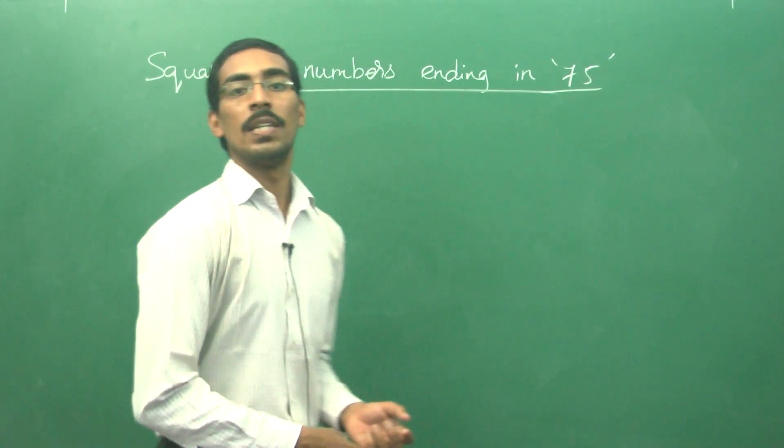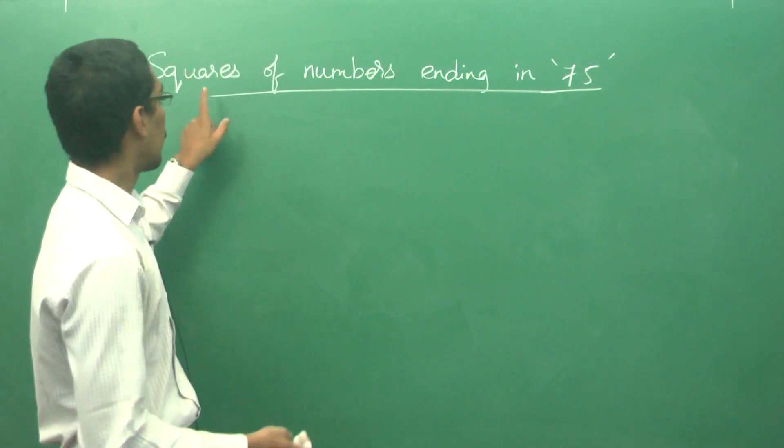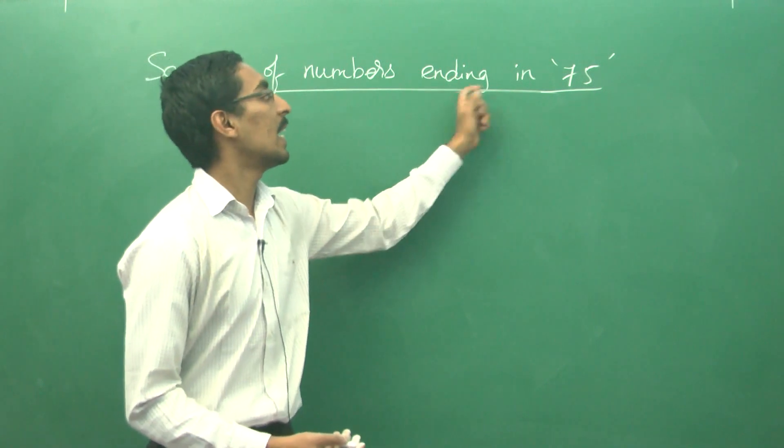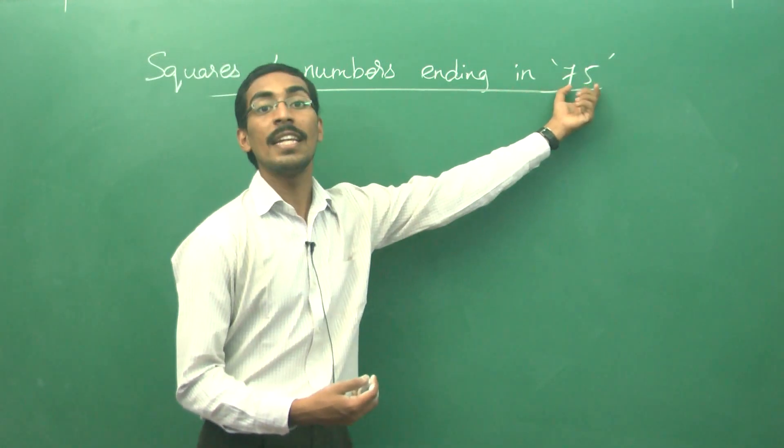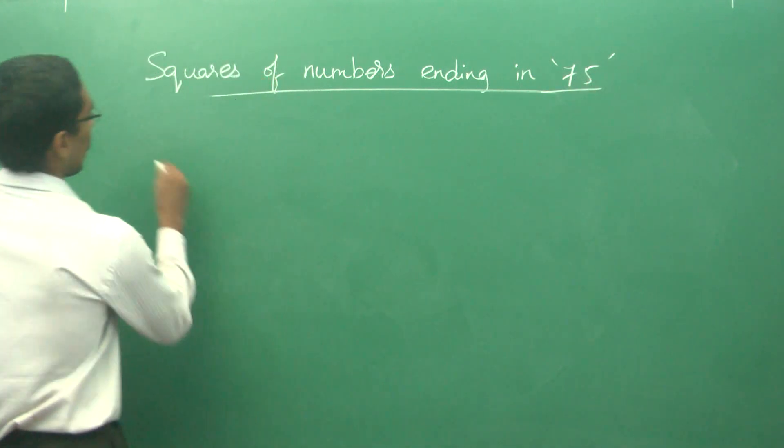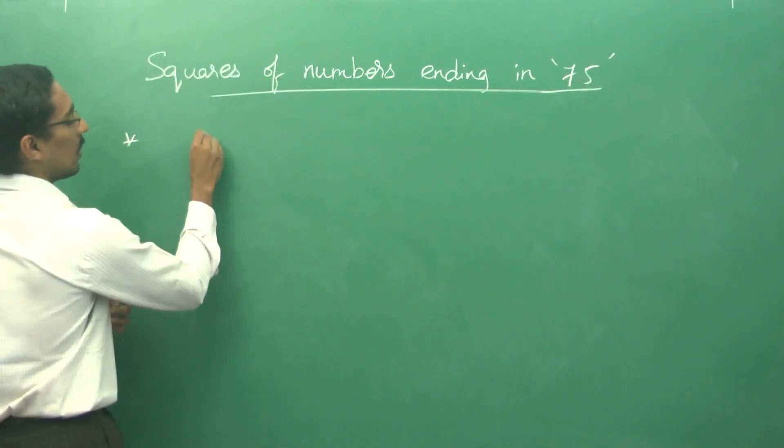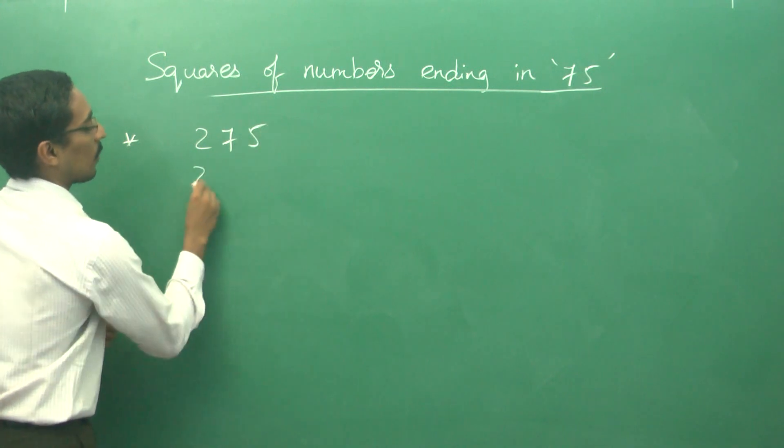Hello everybody, now we shall see how to find the squares of numbers ending in 75. Let us take an example: 275 square.